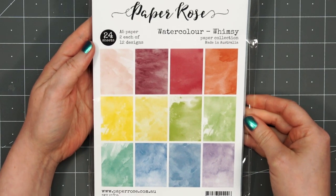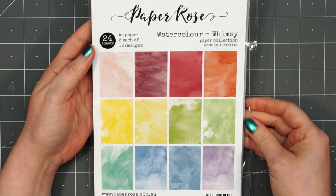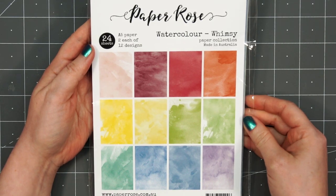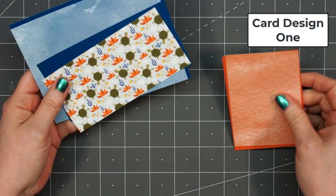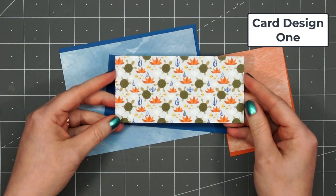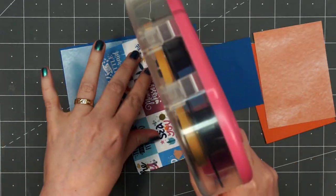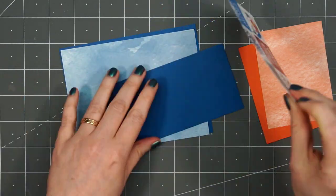I'll also be using their Watercolor Whimsy Collection. This is an A5 size paper collection. Since the patterns in the 6x6 collection are fairly busy, I wanted to bring in some muted patterns to tone down that busyness.